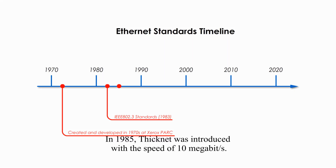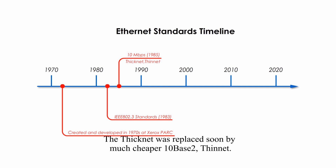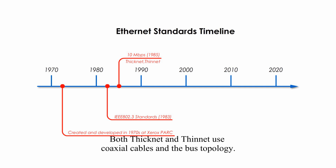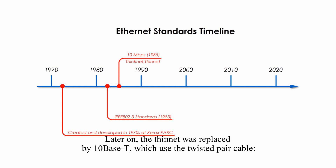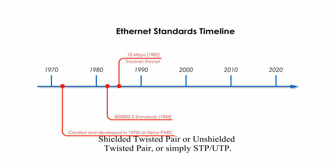In 1985, thicknet was introduced with the speed of 10 megabit. The thicknet was replaced by the much cheaper 10-Base-2 thinnet. Both thicknet and thinnet use coaxial cables and bus topology. Later on, the thinnet was replaced by 10-Base-T, which used twisted-pair cable — shielded twisted-pair or unshielded twisted-pair, or simply STP/UTP.